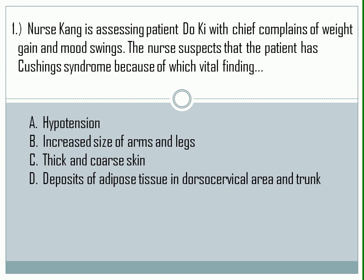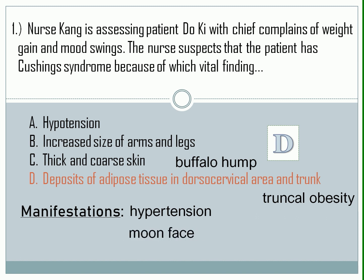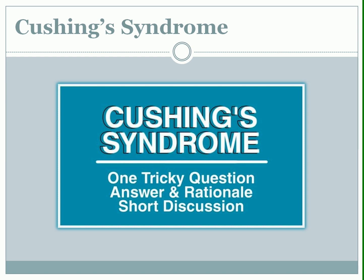Question number 1. The correct answer is Letter D. The key manifestations of Cushing's Syndrome are truncal obesity, buffalo hump, hypertension, moon face, mood swings, and muscle wasting. If you want a short discussion about Cushing's Syndrome, you can check this link after this video.